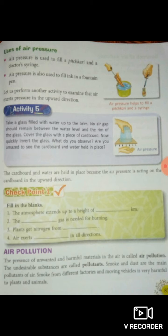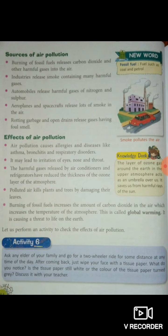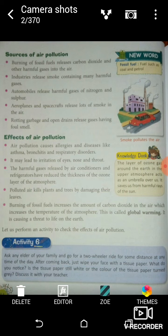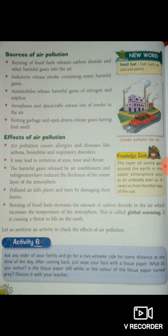Smoke is not just smoke — it is a mixture of many harmful gases coming directly from automobiles, factories, and industries. The sources of air pollution include burning of fossil fuels such as coal and petrol, which release carbon dioxide and other harmful gases. Industries release lots of smoke. Automobiles, airplanes, and spacecraft also release harmful smoke directly into the air.